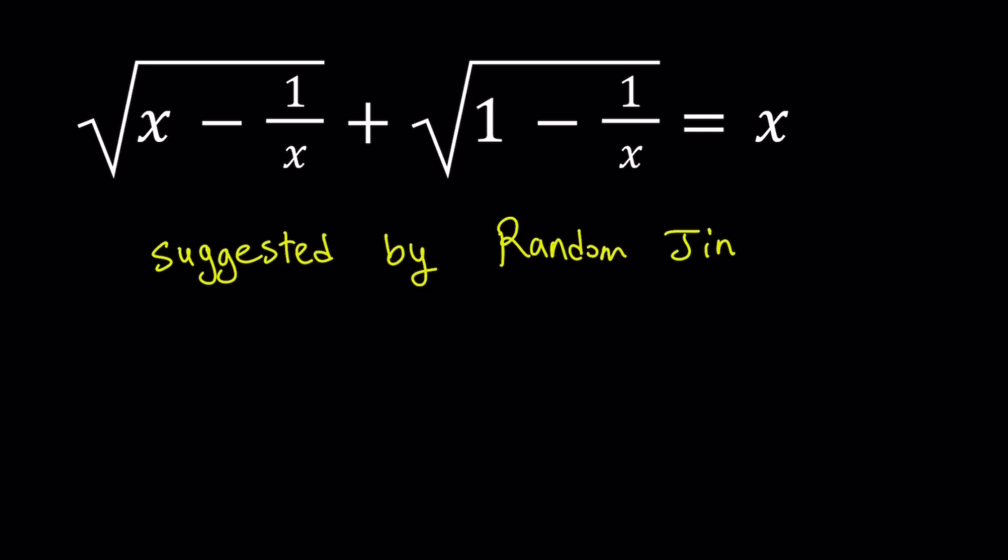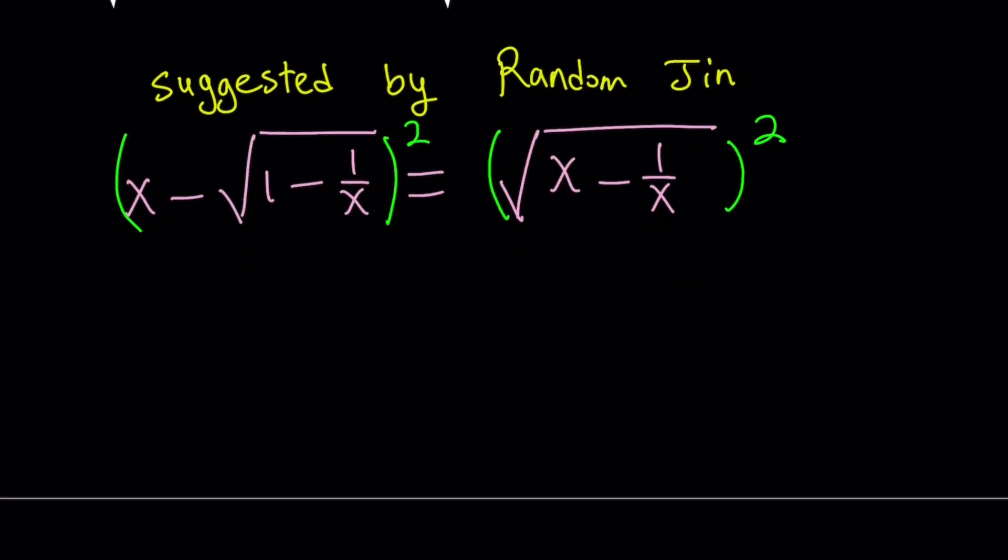We're going to put the radicals on different sides first. I would like to bring over the square root of 1 minus 1 over x to the other side and set it equal to the other radical. Then I'm going to square both sides obviously. When I square both sides, I'm going to get rid of some of the radicals.